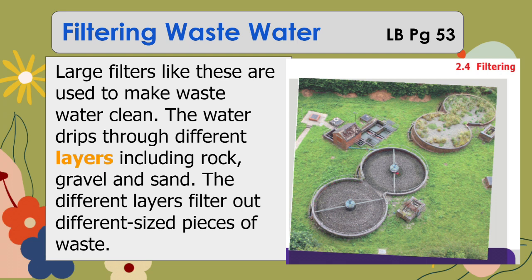In your learner's book, page 53: filtering wastewater. Wastewater is the polluted form of water after it has been used in a variety of applications, usually leaching, flushing, or washing away waste from our daily activities. Large filters like these are used to make wastewater clean. The water drips through different layers — meaning an amount of material that covers a surface — including rock, gravel, and sand.